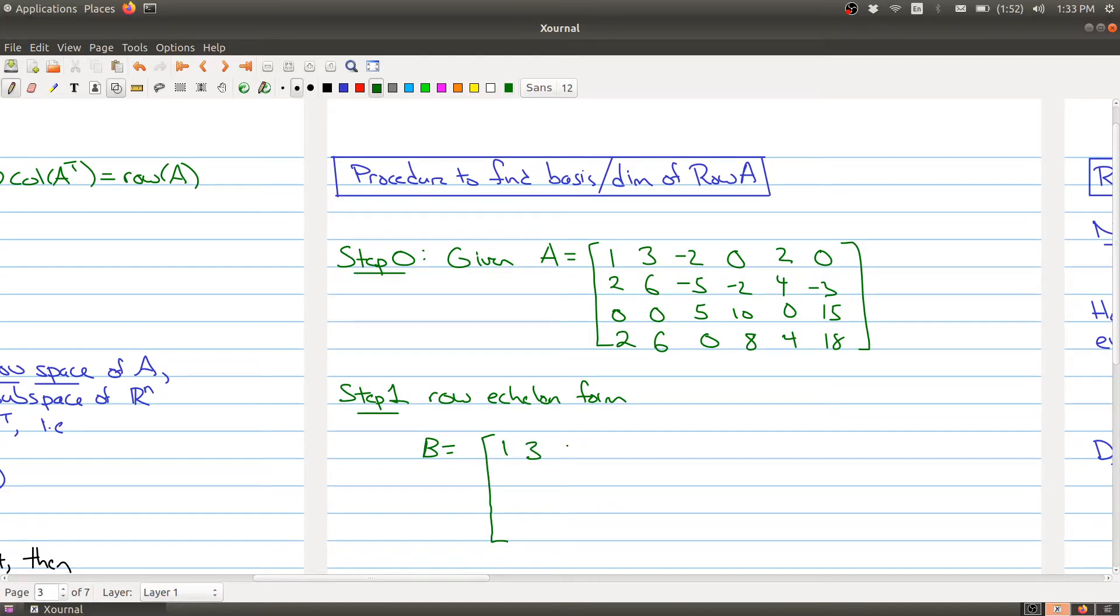So we have 1, 3, 0, 4, 2, 0, and we have 0, 0, 0, 1, 2, 0, 0, and 0, 0, 0, 0, 0, 0, and 1, and then a row of zeros at the bottom. Okay, so there's my matrix B.